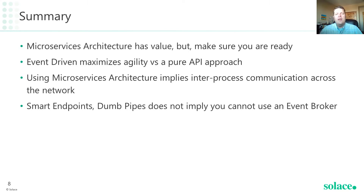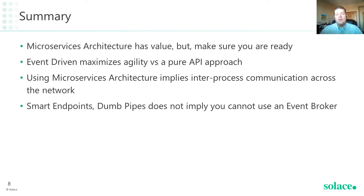To conclude, here are my takeaways for this segment. First, microservices architecture has value, but really analyze your application and its needs before you jump in — it's not a panacea, but provides value for large to medium-sized applications. Two, event-driven maximizes agility. In some coming videos, we'll show you exactly why, but for now ponder the two interaction paradigms — both API-driven and event-driven — and consider the power of liberating your data and putting it into motion. Three, microservices means you're building a distributed application. That comes with side effects you didn't have to worry about with a monolithic application — if you understand those laws, you'll be successful; if you ignore them, you'll probably end up in big trouble.